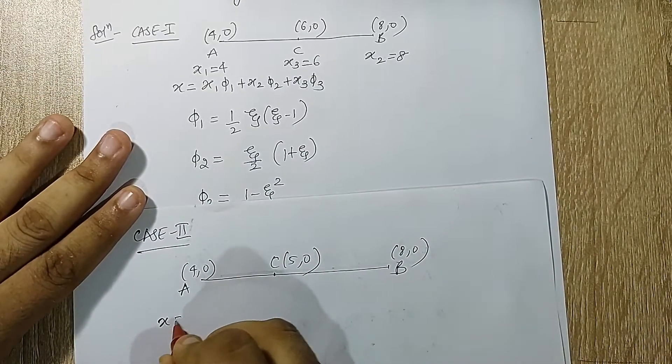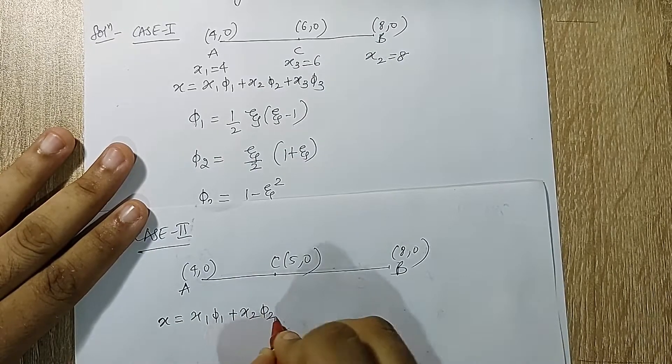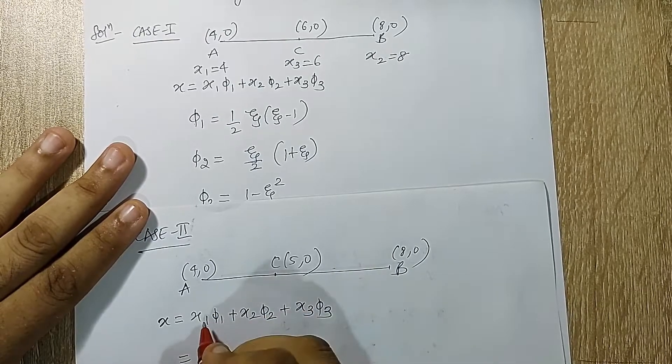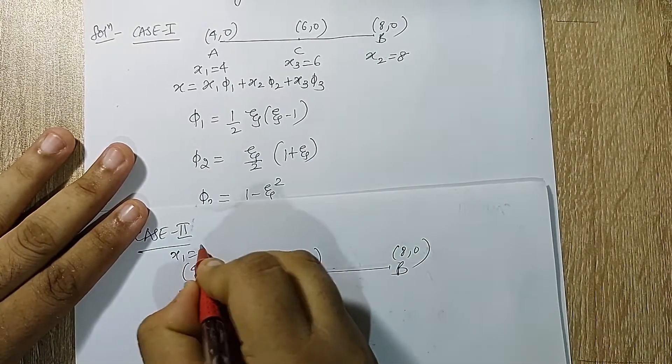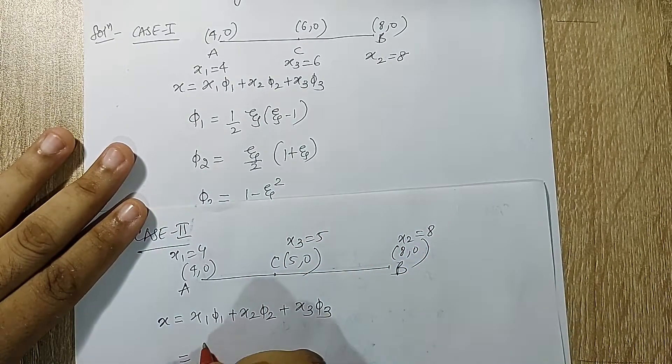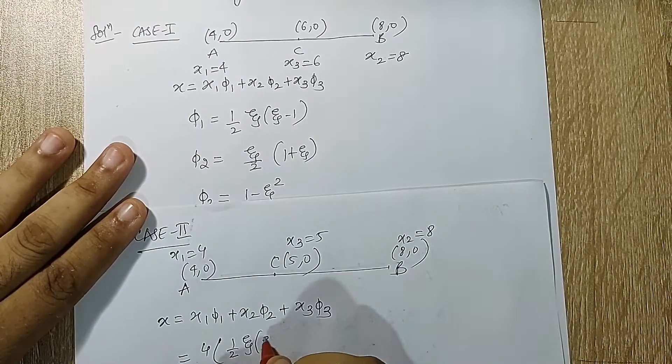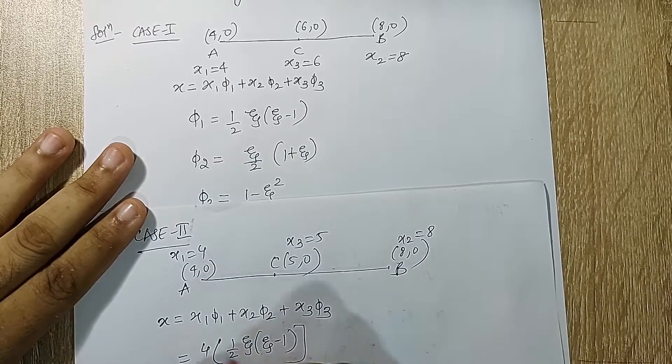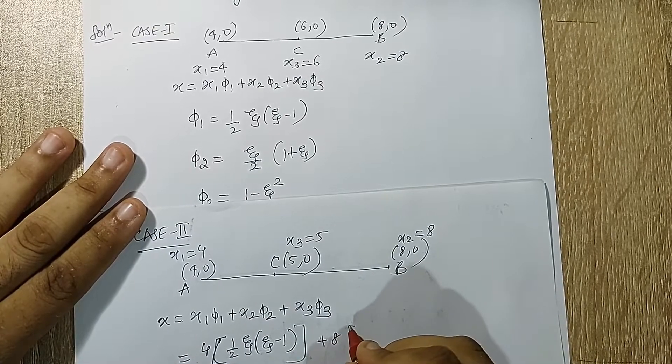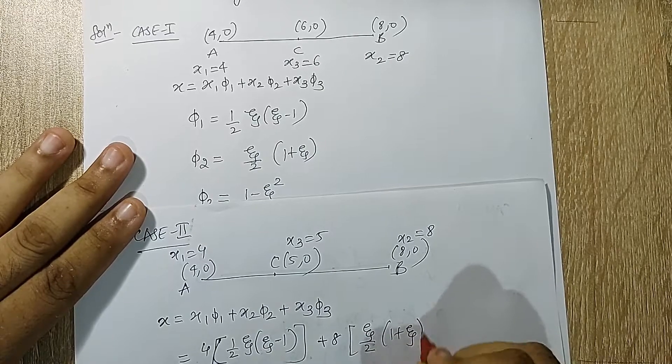A is (4,0), B is (8,0), C is (5,0). I'll be using the same equation: x = x1*phi1 + x2*phi2 + x3*phi3. Now here I'll directly write down: x1 is 4, x3 is 5, x2 is 8. So 4 into 1/2*zeta*(zeta - 1), then I have plus 8 into zeta/2*(1 + zeta), and lastly plus 5 into (1 - zeta squared).